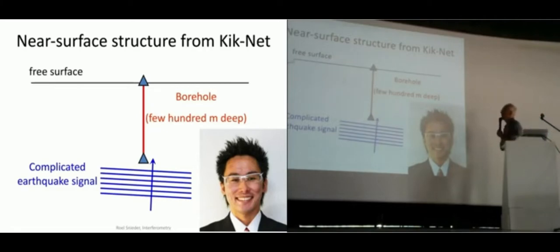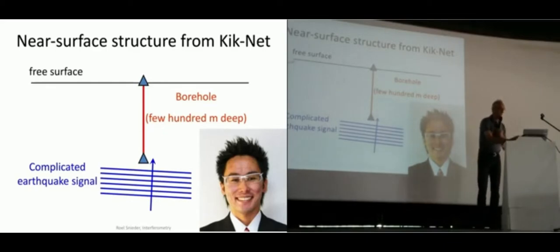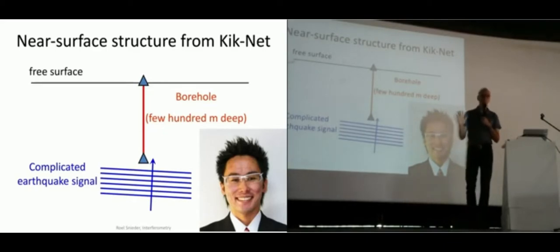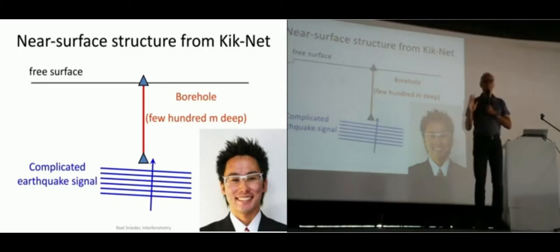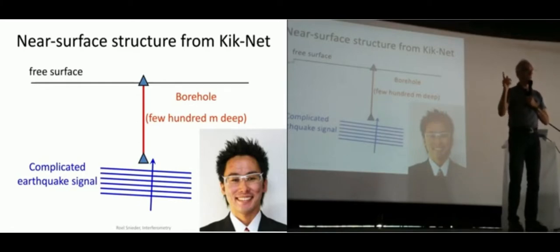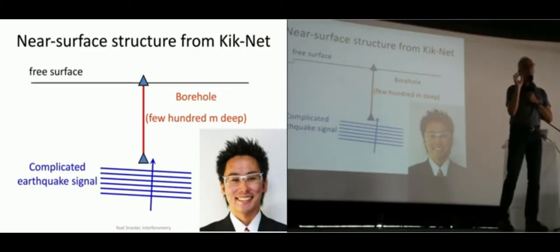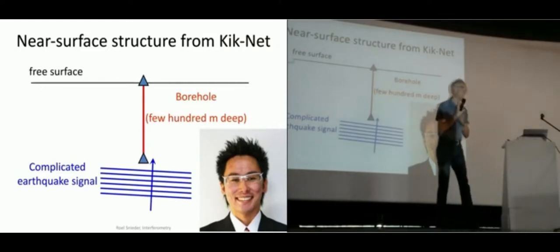I want to show examples of interferometry from the work of Nori Nakata, who did his PhD with me. I want to get across that most of us in the interferometry community compute cross-correlations, but there are real advantages of computing deconvolutions instead. I'll show you some examples and encourage you to play around with deconvolutions in addition to cross-correlations, because they can be much more robust and can give you much higher temporal resolution — which is really important for looking at time-lapse changes.